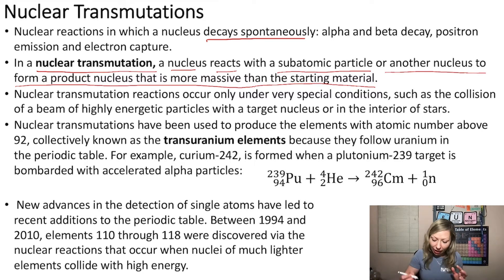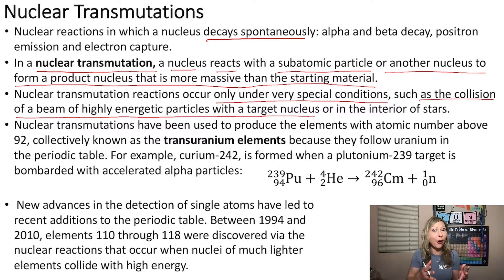Nuclear transmutation reactions occur only under very special conditions, such as the collision of a beam of highly energetic particles with a target nucleus in particle accelerators or in the interior of stars. This is from where our sun is getting its energy.